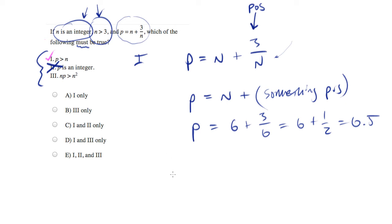We already know that P is greater than N. That's from statement number 1. So let's call P large and let's call N small.